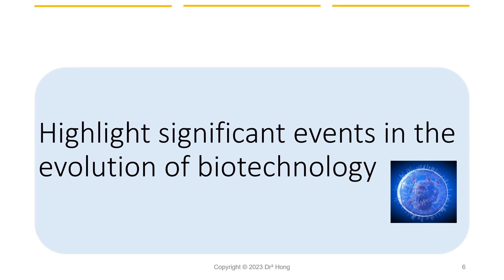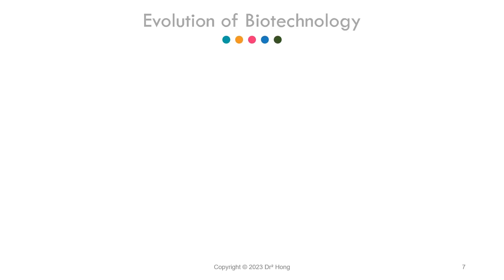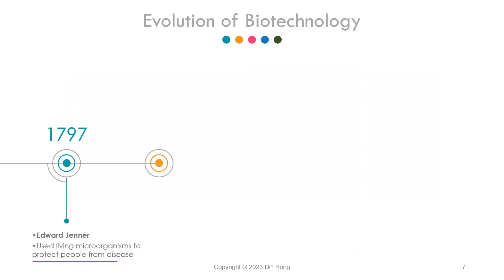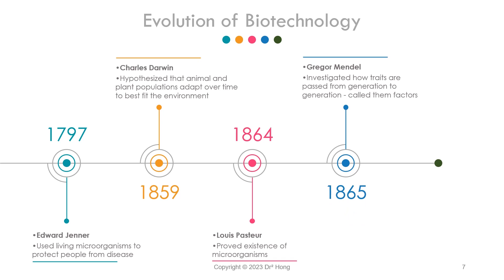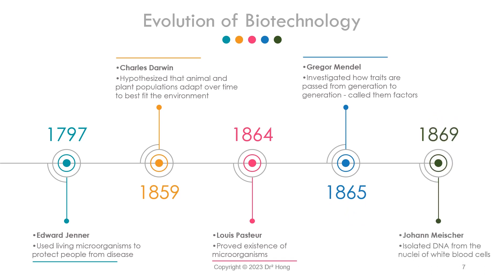The roots of modern biotechnology can be traced to the work of Louis Pasteur, Robert Koch, and Gregor Mendel approximately 100 years ago. Pasteur and Koch laid the groundwork for the current science of microbiology, while Gregor Mendel described the laws of genetic inheritance. Many scientists contributed to the advancement of these fields, ultimately leading to the discovery of DNA as the genetic material and the subsequent determination of the structure of DNA in the early 1950s by James Watson and Francis Crick. With the discovery of the structure of DNA, the direct manipulation of genetic traits became a possibility.